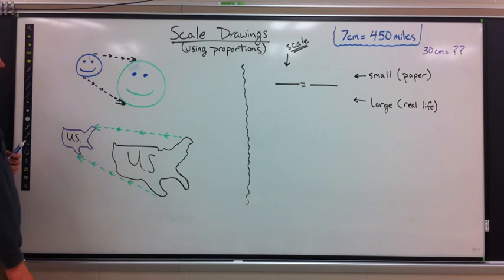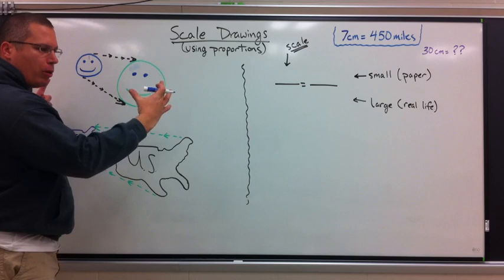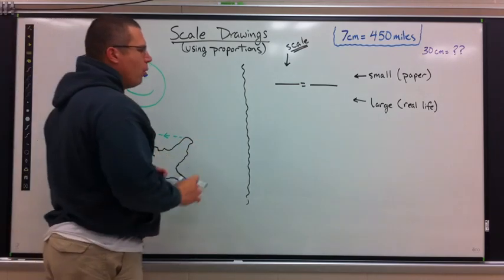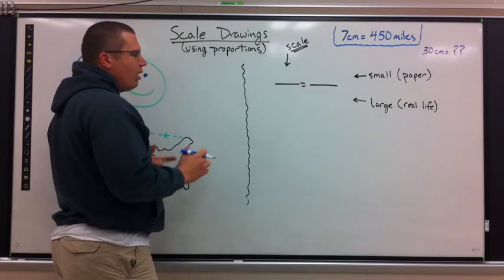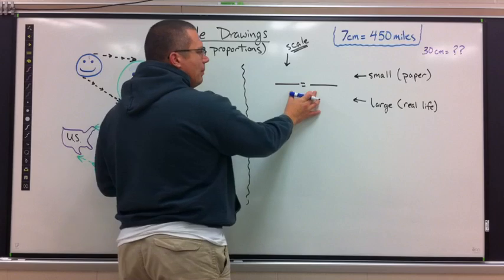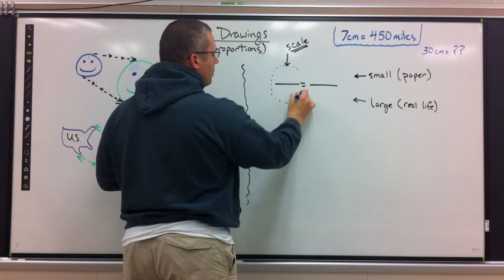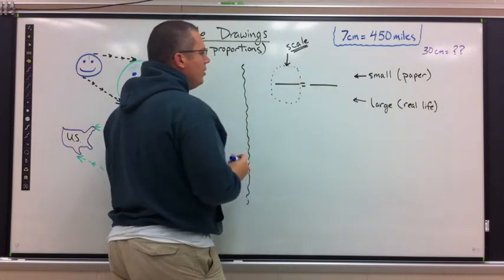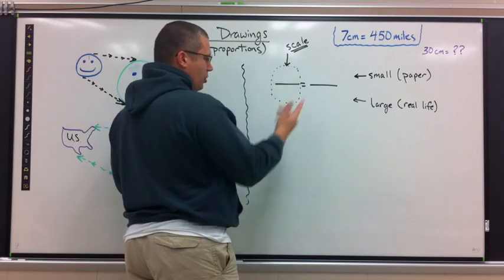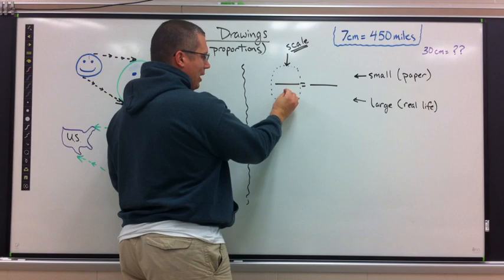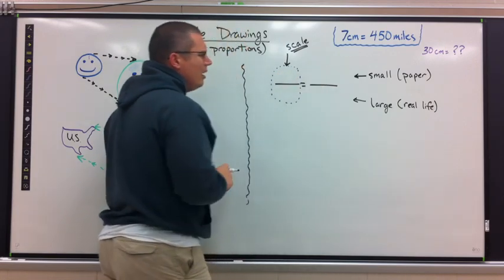Whether making something bigger proportionately or smaller, we'll use proportions and solve them the same way — the biggest challenge becomes the setup. We're always going to start with our blank proportion. The scale always goes on the left side. The scale is the ratio that tells us how the two items are related — the small item and the big item.